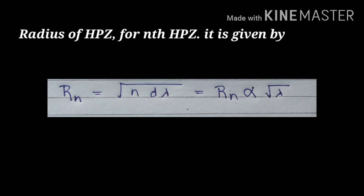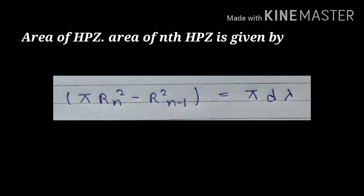Area of half period zone, the nth half period zone, is given by An equals pi into rn square minus r square n minus 1 minus lambda by 2. If you want to see part 2, please subscribe to my YouTube channel and press the bell icon. Thanks for watching.